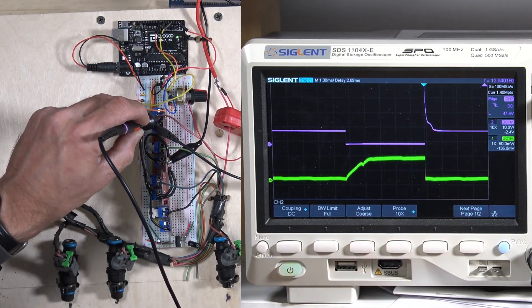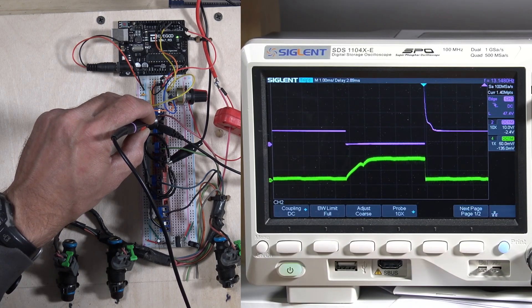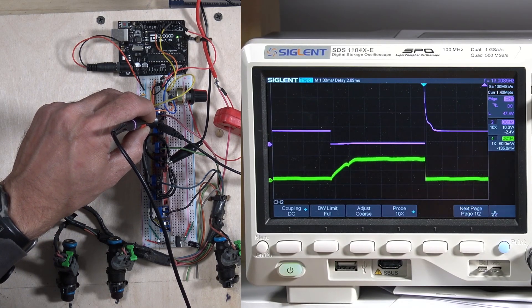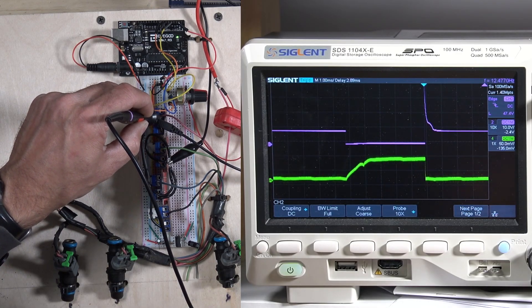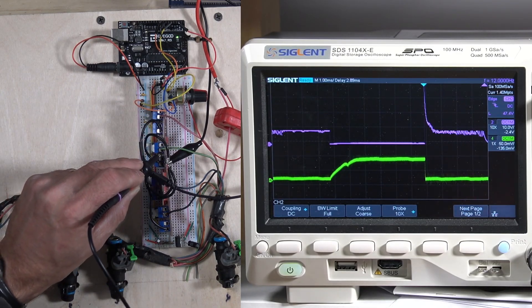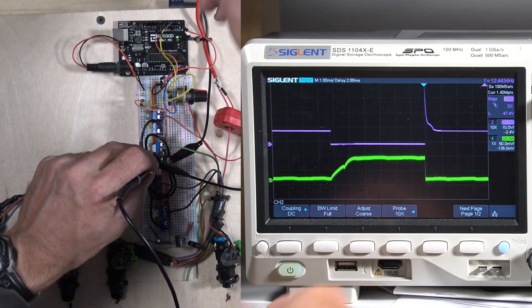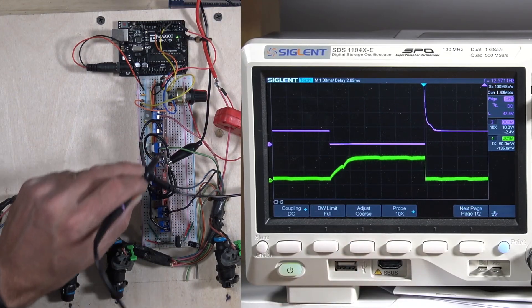You can actually see a little bump in the current ramp there, which is awesome. That's some pintle movement action. Sometimes you can't see that very well, sometimes you can. It all depends on the vehicle or injector style you're checking. Let's check number two. Looks about the same, really don't see much difference there.